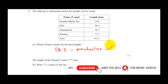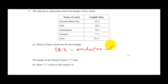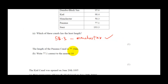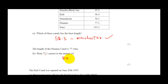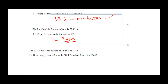The length of the Panama Canal is 77.1 kilometers. We need to give this correct to the nearest ten. When approximating to the nearest ten, we count in tens: 10, 20, 30, 40, 50, 60, 70, 80. The digit 7 is above 5, so it rounds up. To the nearest ten, the answer is approximately 80 kilometers.